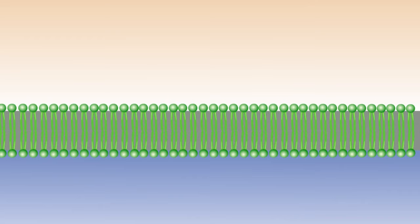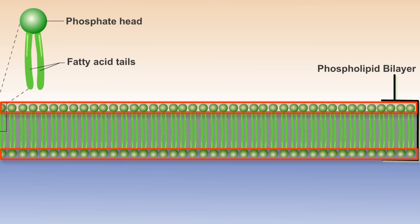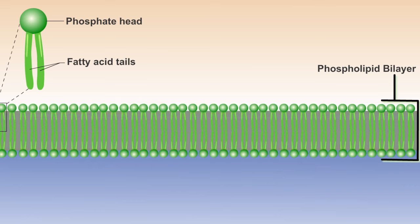One example of a semipermeable membrane is a phospholipid bilayer, a group of phospholipids consisting of a phosphate head and two fatty acid tails arranged into a double layer, with the hydrophilic phosphate heads exposed to the water content outside and within the cell and the hydrophobic tails hidden on the inside.